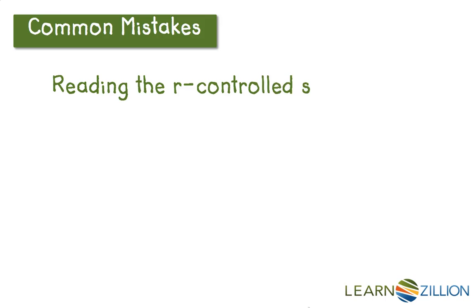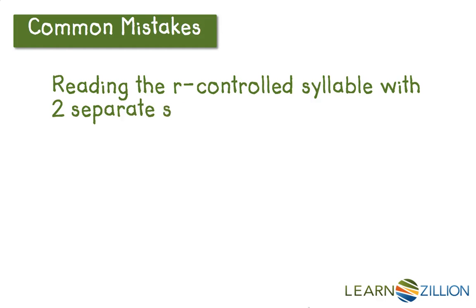One common mistake is reading the R-controlled syllable with two separate sounds instead of as one new sound. For example, sometimes people see this word and will sound it out: F-ah-er. Far. But that doesn't make sense or sound like a word that we know. This word is actually 'for.'